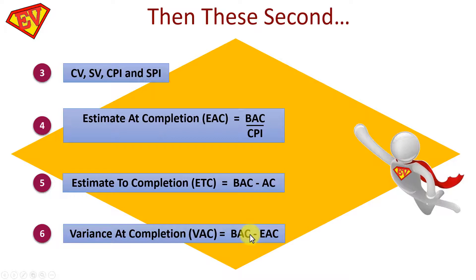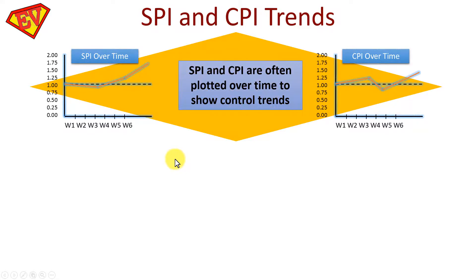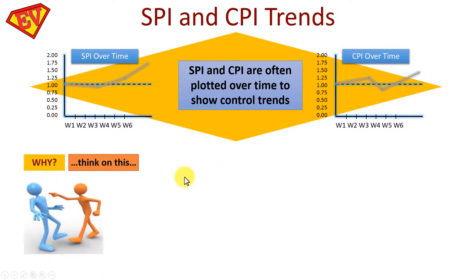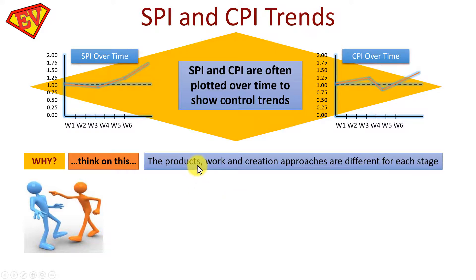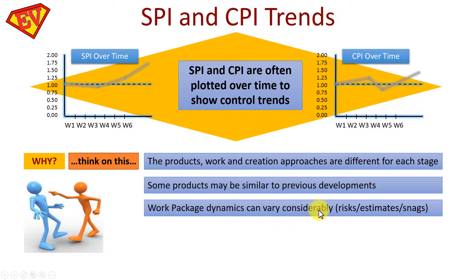Step 6: Variance at Completion (VAC) = BAC − EAC. When it comes to SPI and CPI, you often need to understand trends plotted over time. CPI and SPI vary throughout a project because: the products and approaches differ by stage; some products may be similar to previous work, making teams more efficient; work package dynamics vary with risk, estimate certainty, and snags.